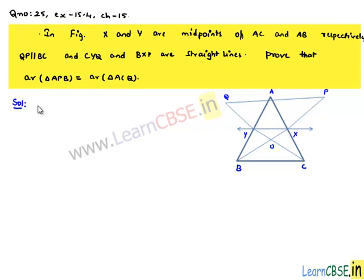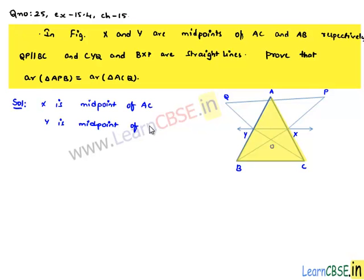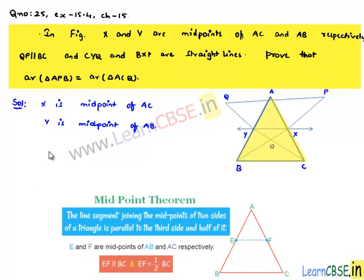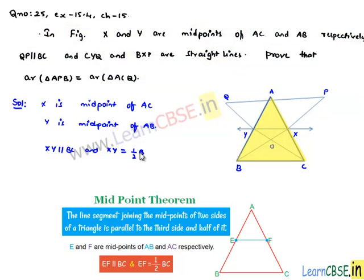In order to prove this, let us note that in triangle ABC, X is the midpoint of AC and Y is the midpoint of AB. From the midpoint theorem, we can say that XY will be parallel to BC and XY will be equal to half times BC.